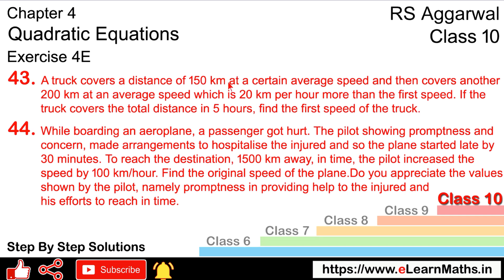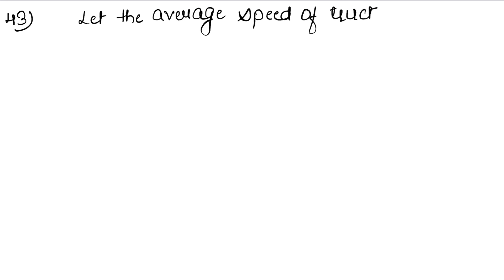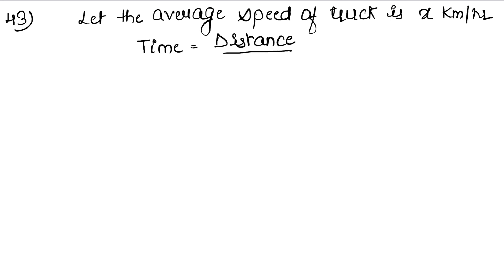We take the first speed of the truck for the 150 km. We don't know the average speed, so let the average speed of the truck be x km per hour. We know that time equals distance upon speed — that is, distance divided by speed.